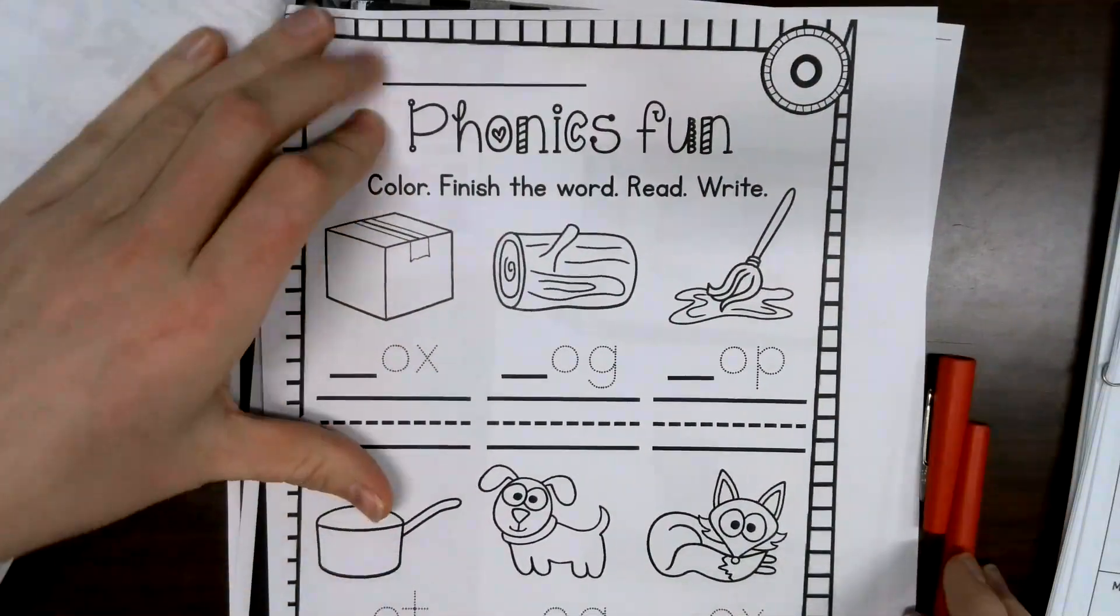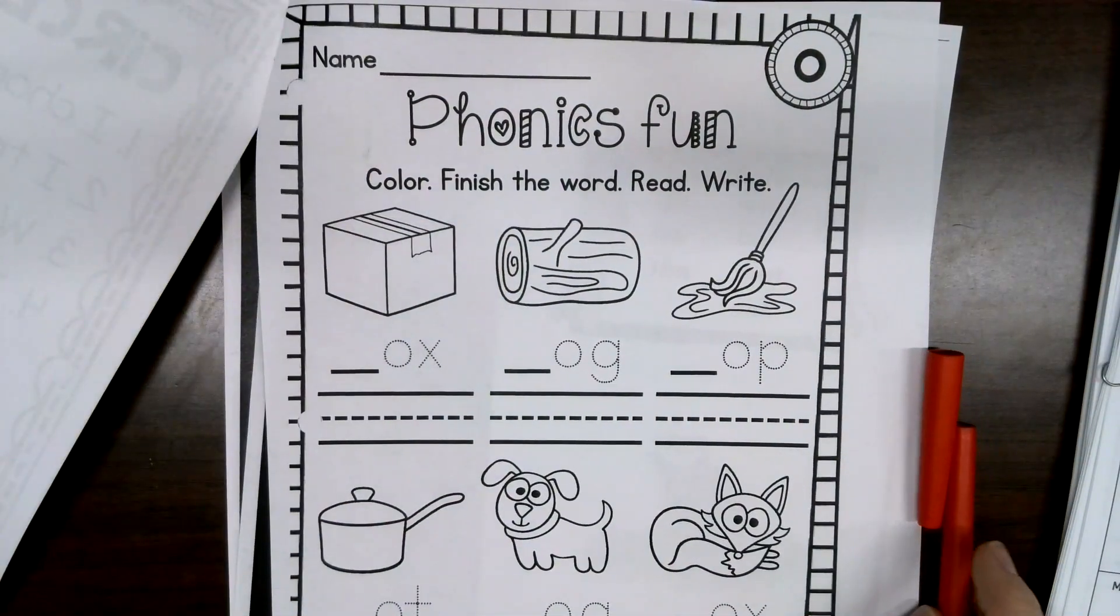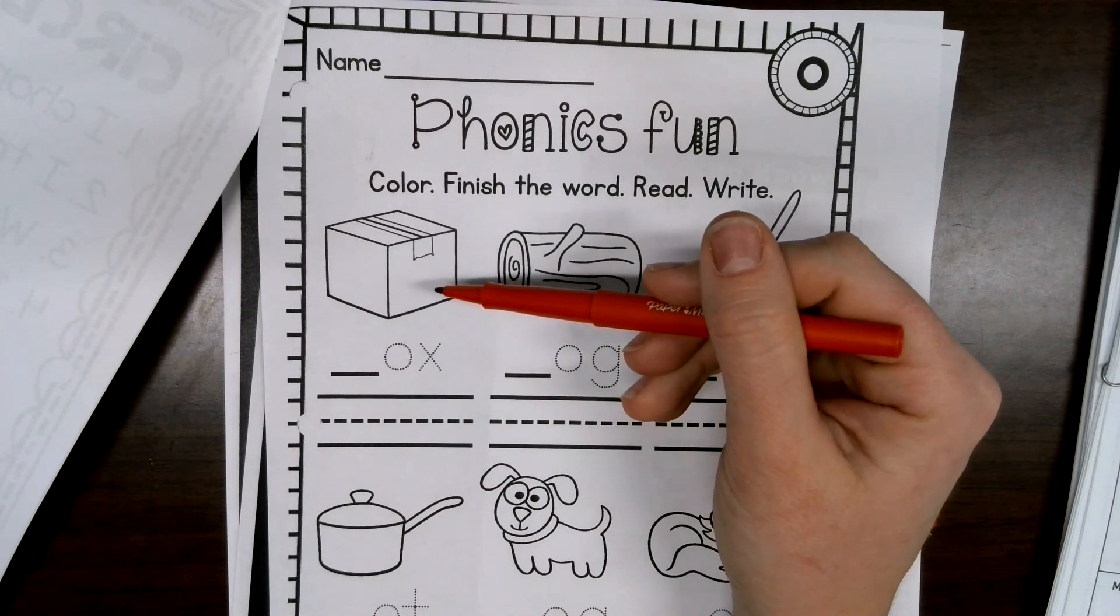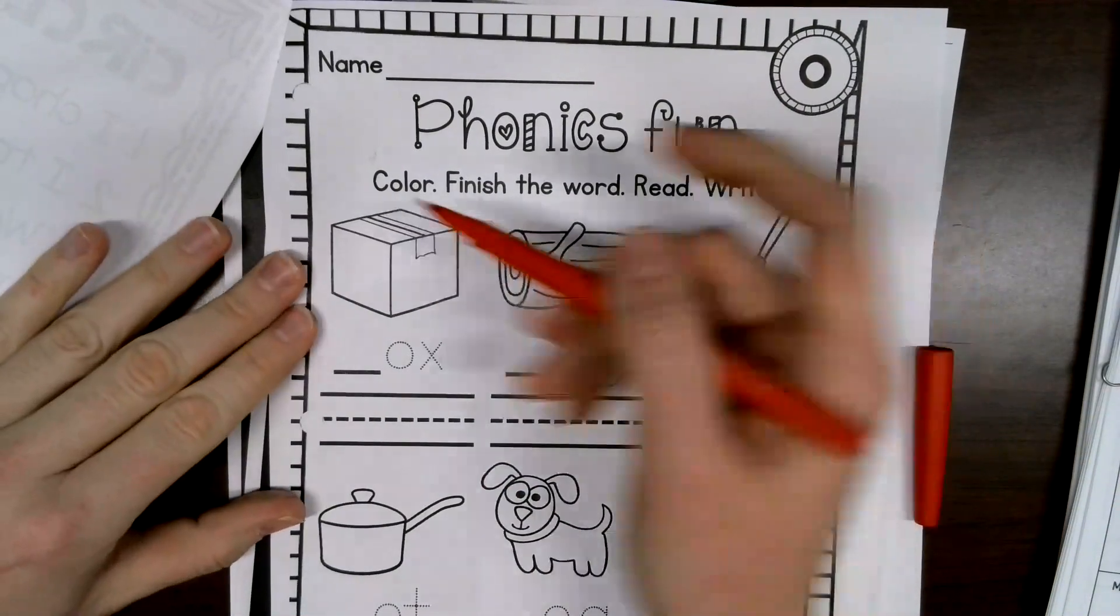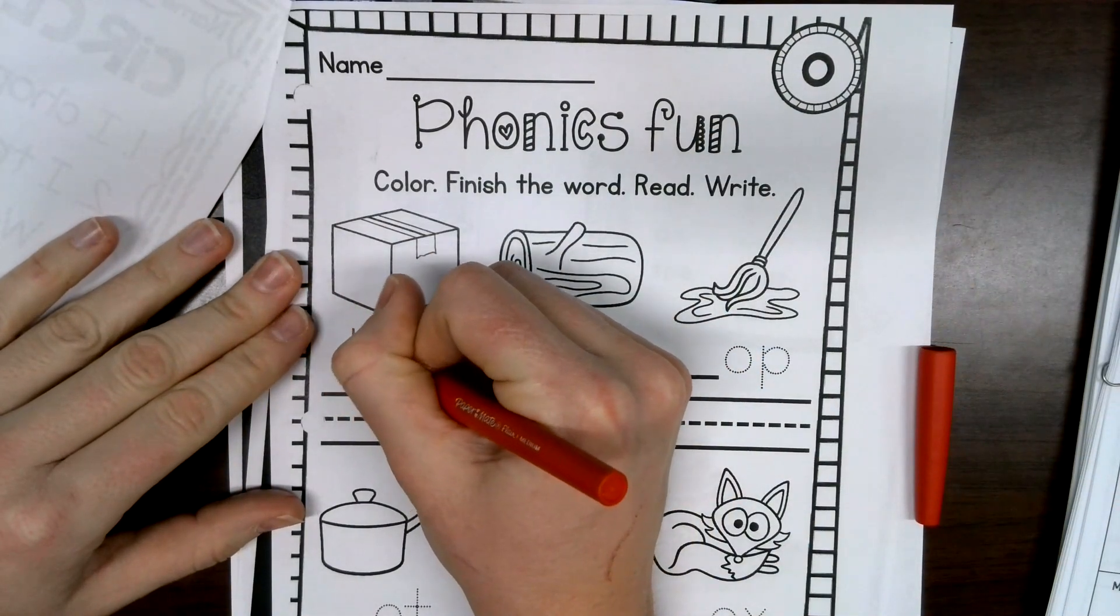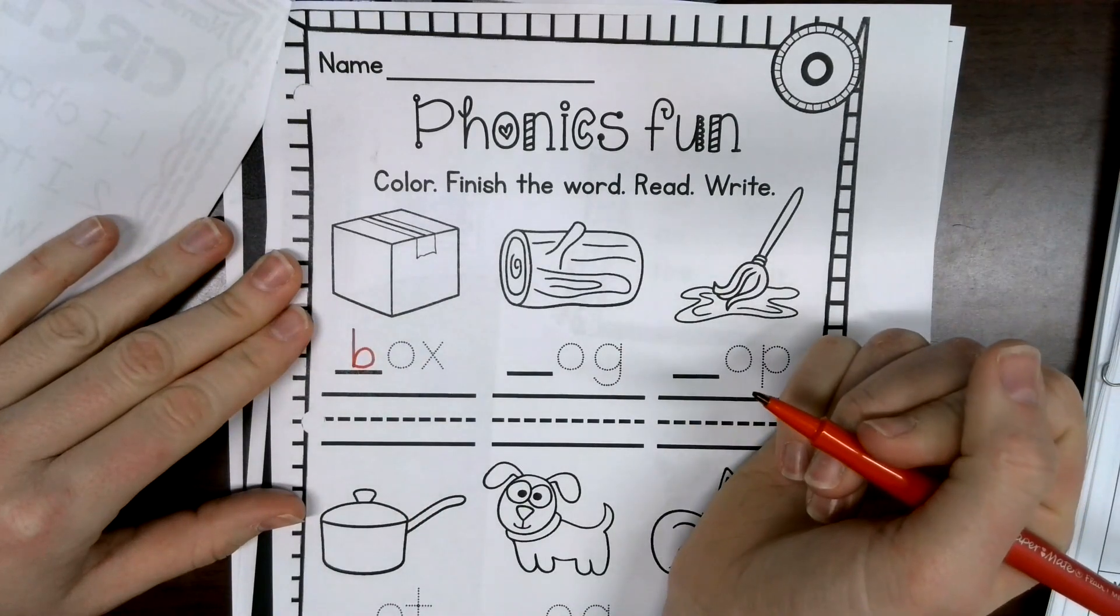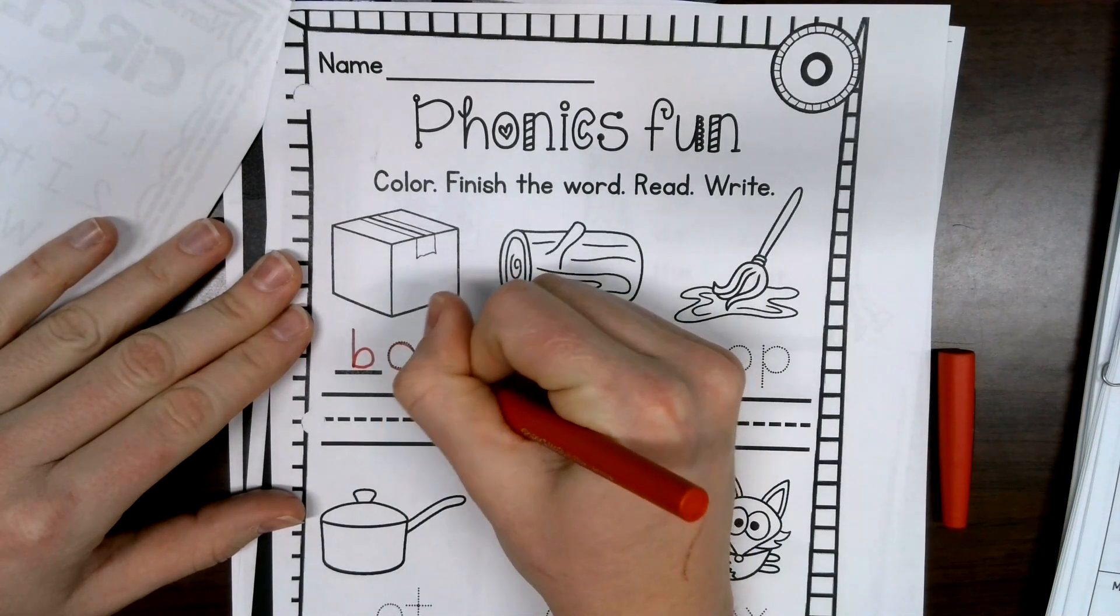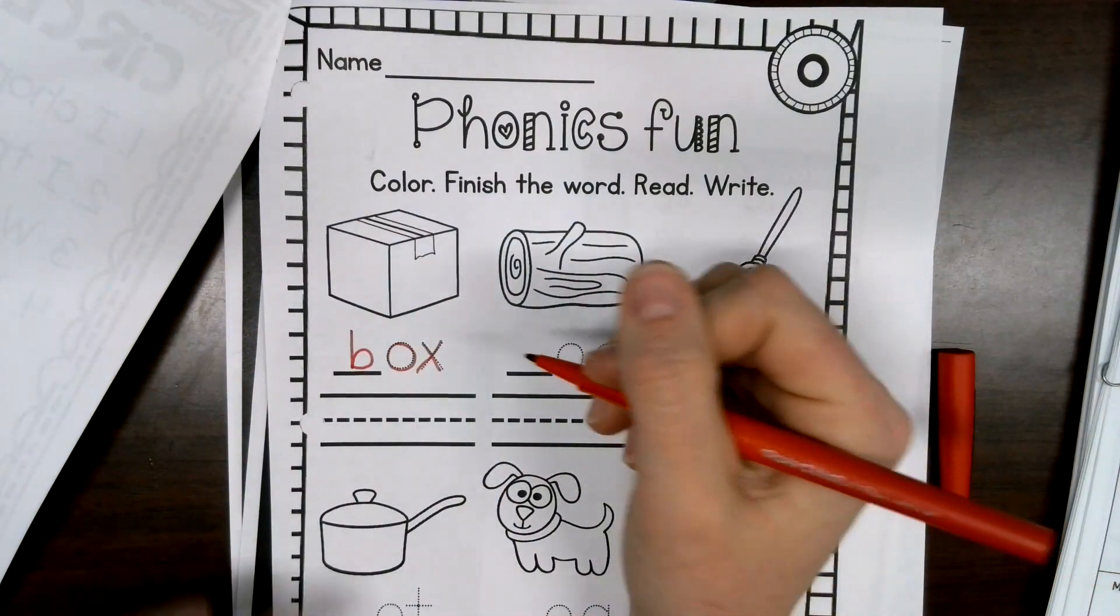And our last one, we just need to finish the words with the beginning sound. Trace and then write. So if we look at this one, it is a box. B-b-b, that's my missing letter. There is a B. And then I'm going to trace my O, and I'm going to trace my X, and then I'm going to write them on the line.